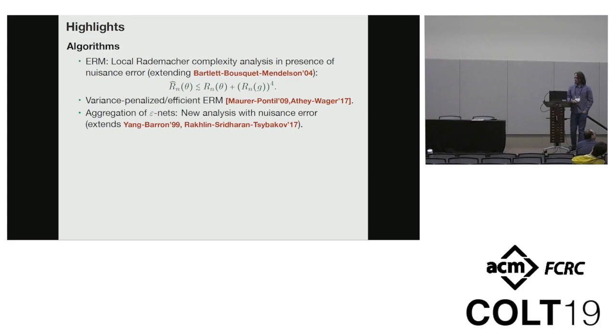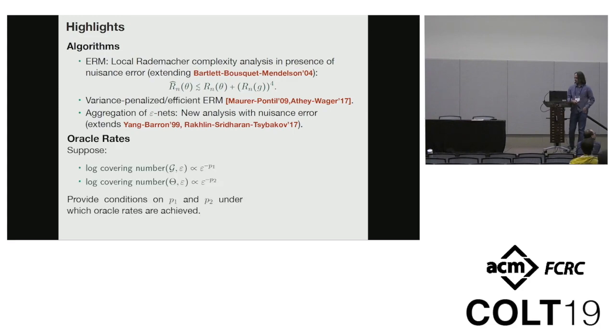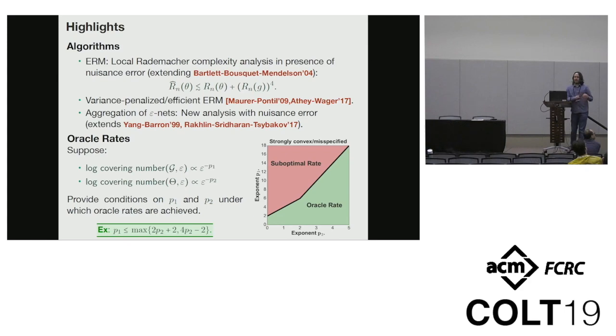The second highlight is we're able to give general conditions under which you get the oracle rate based on how complex is the nuisance class relative to the target class. If the nuisance class is not too much bigger than the target class in a way that's quantified through metric entropy, then you get the oracle rate. We have phase diagrams that characterize the feasible region for which you get oracle rates. Check out the poster for more details.